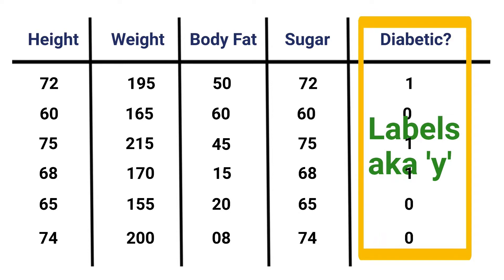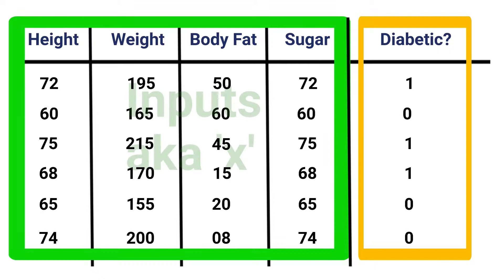Now this column of zeros and ones under diabetic are our labels, also known as Y. Now labels are basically our answers, right? They're the column that we would like to predict. But in order to predict, we first need to train our neural network. And that means providing data that includes the answers. The other set of values, these are our inputs, also known as X. Now, the inputs is the data we're going to be using to attempt to predict whether or not someone is diabetic or to attempt to predict our labels. And this is the data that we'll use to train our neural network.